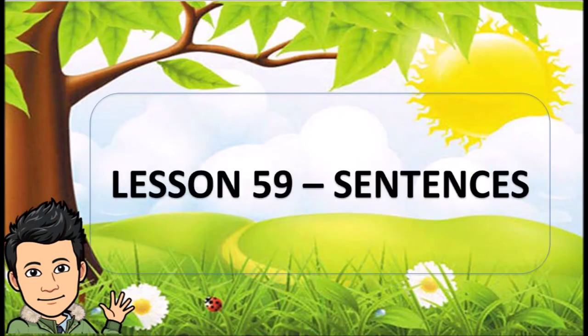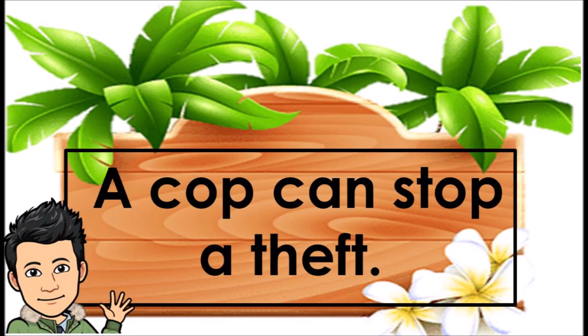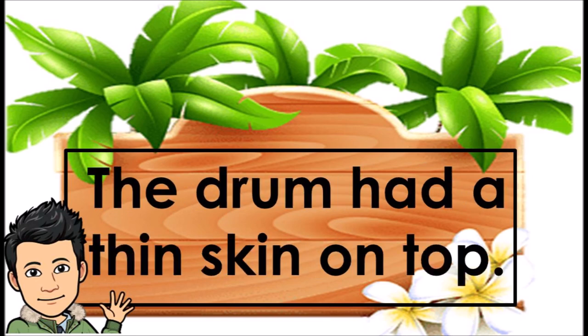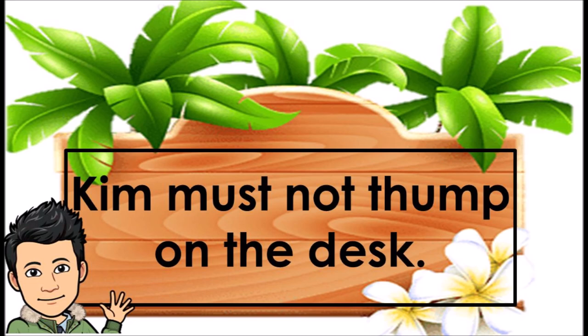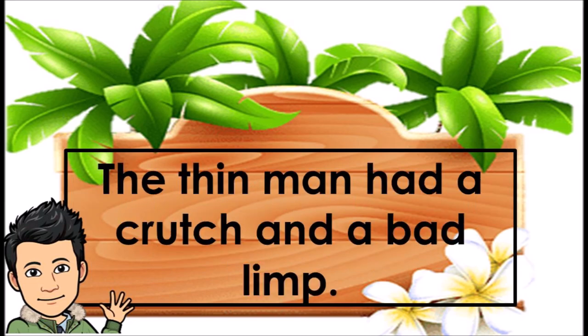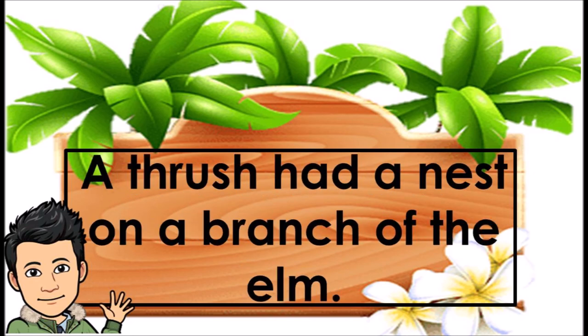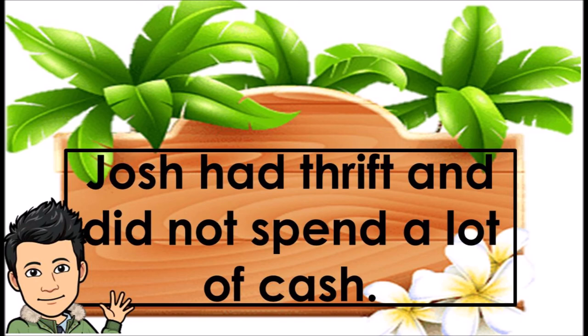Lesson 59 Sentences. A cop can stop a theft. The drum had a thin skin on top. Kim must not thump on the desk. The thin man had a crutch and a bad limp. A thrush had a nest on a branch of the elm. Josh had thrift and did not spend a lot of cash.